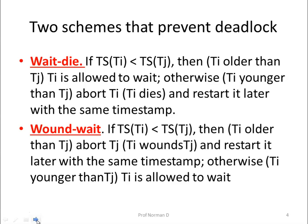We will discuss two schemes: the first is Wait-Die and the second is Wound-Wait. In the Wait-Die scheme, if the timestamp of transaction Ti is less than the timestamp of Tj, then Ti is older than Tj and Ti is allowed to wait. Otherwise, Ti is aborted — that is, Ti dies — and is restarted later with the same timestamp.